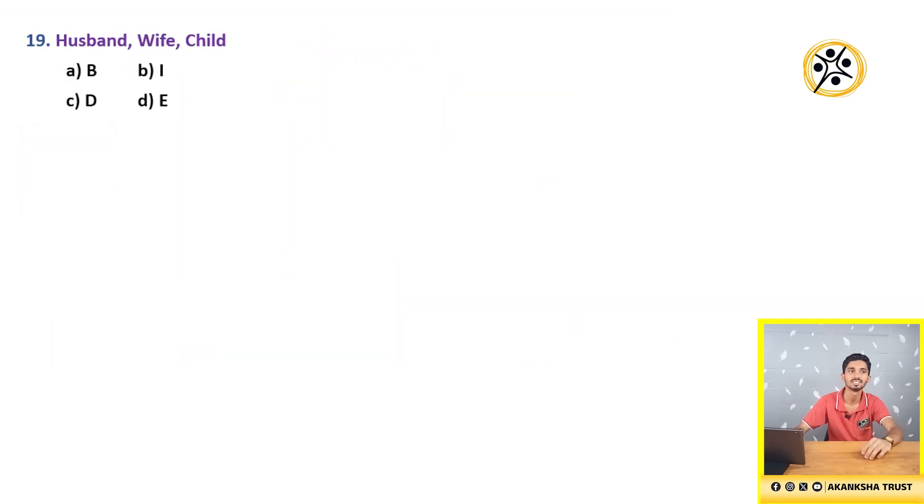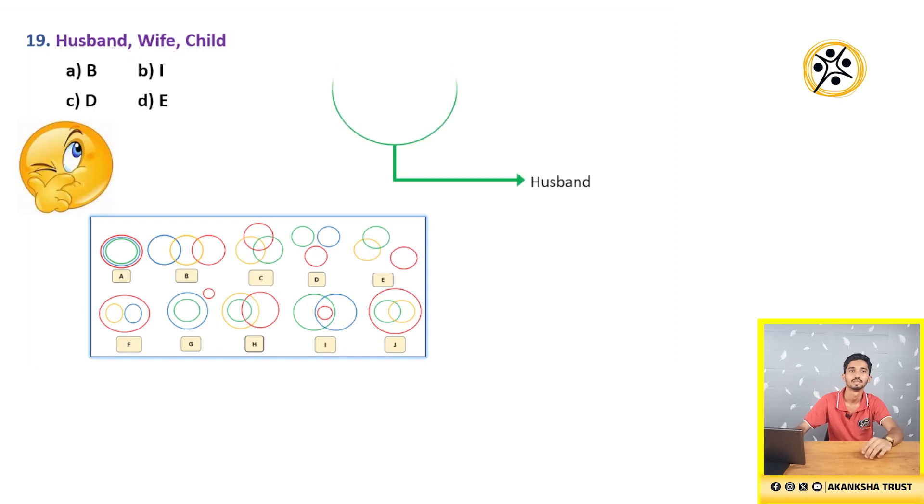Let's see the 19th question: Husband, Wife, Child. Here, first circle represents husband, second circle represents wife. Third circle which is present within wife and husband is child. So, husband is dependent on wife as well as child. Wife is dependent on child as well as husband. Child is dependent on both wife and husband. So, this figure is similar to I. Hence, the correct answer is B, i.e. I.